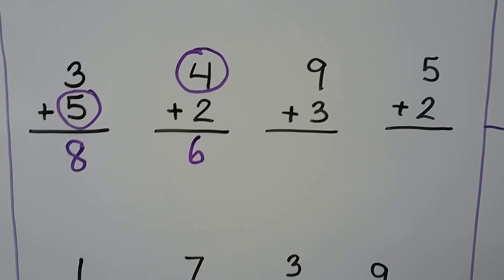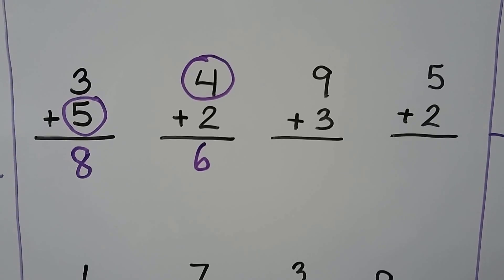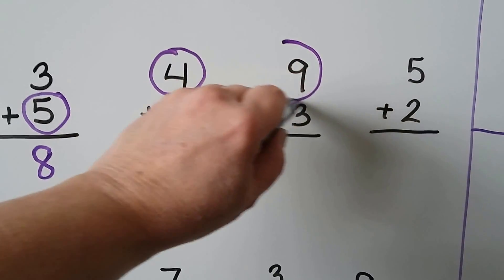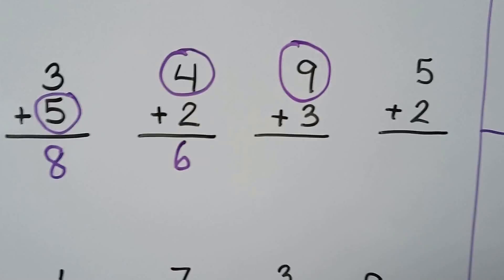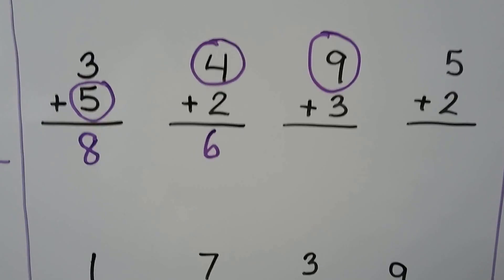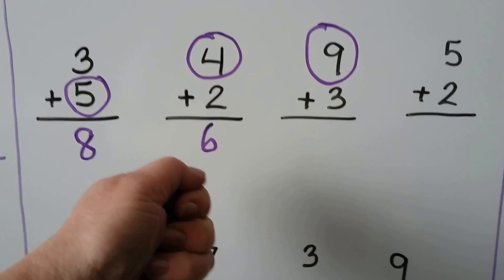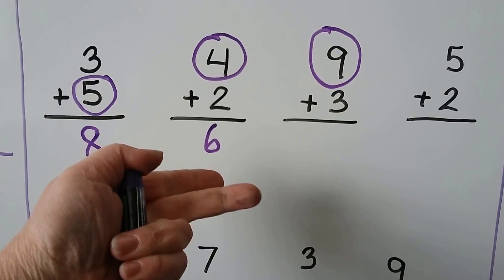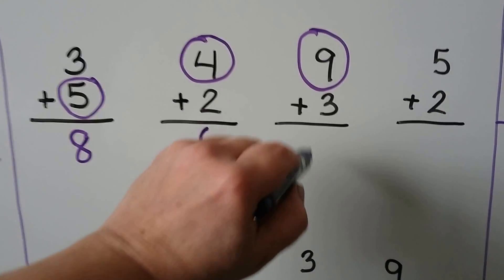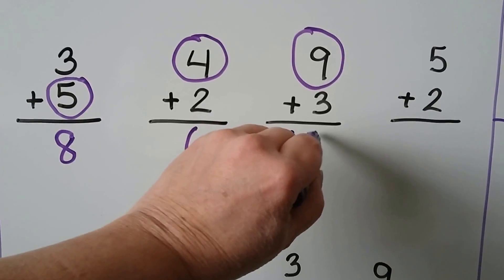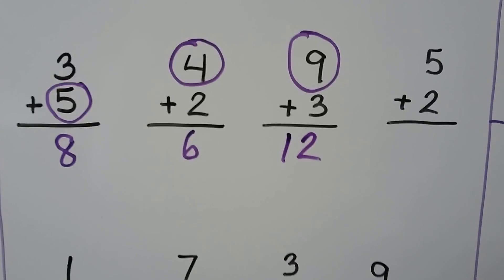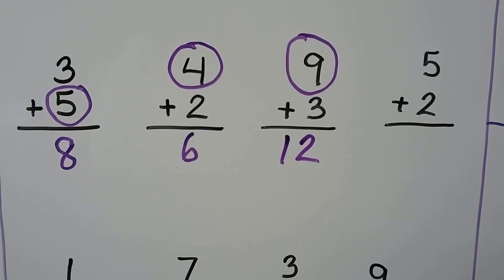9 plus 3 — 9 is the greater addend. We start with the 9 and count on 3: 9, 10, 11, 12. 9 plus 3 is equal to 12.